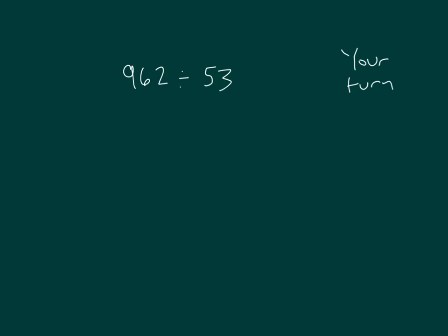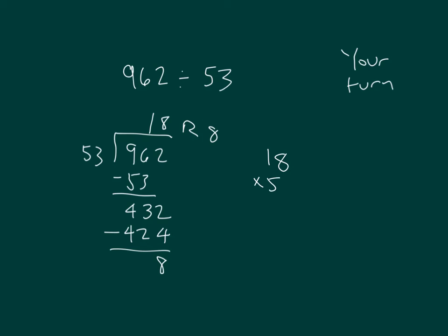Here's another one for you. Show me the standard algorithm and the check. And there's your solution. For your check, you would have 18 multiplied by 53. 3 times 8 is 24, regroup of 2. 3 times 1 is 3, plus 2 is 5. Place a 0. 5 times 8 is 40, regroup of 4. 5 times 1 is 5, plus 4 is 9. Add those two together. And then add in the remainder to show that it does equal 962. So our problem checks.